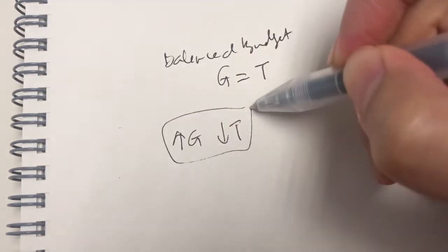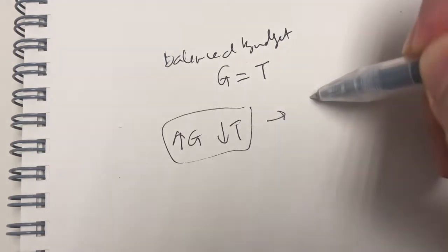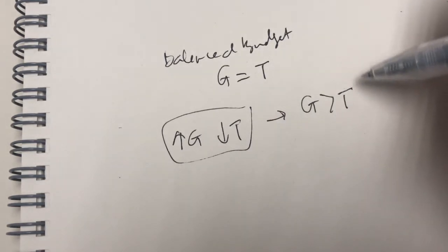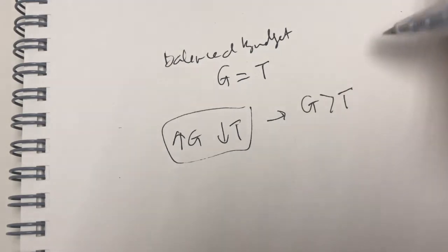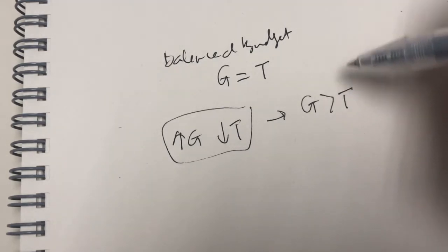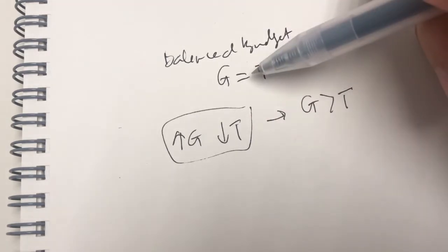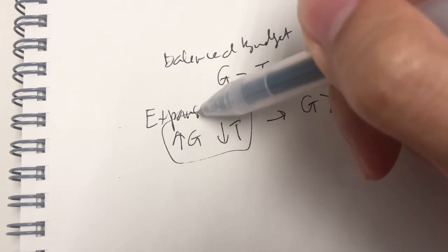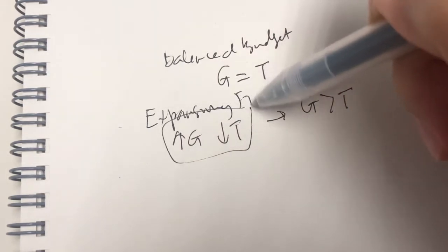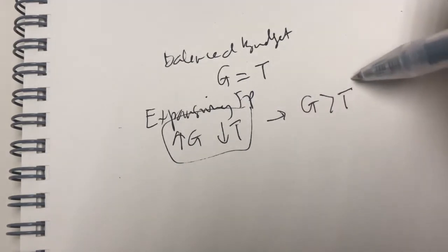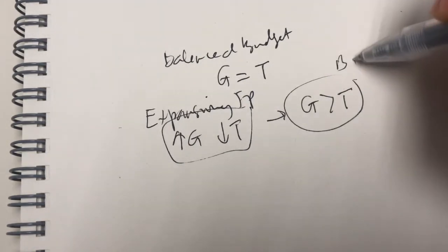So, in either case, what happens is you can see here the G would be more than T, wouldn't it? So in other words, this is a budget deficit. So, I repeat again. If you started off with a balanced budget and then the government opts for an expansionary fiscal policy, what happens is it leads to a budget deficit.